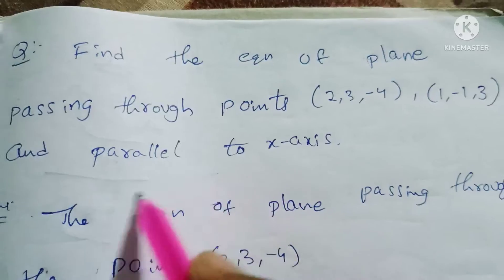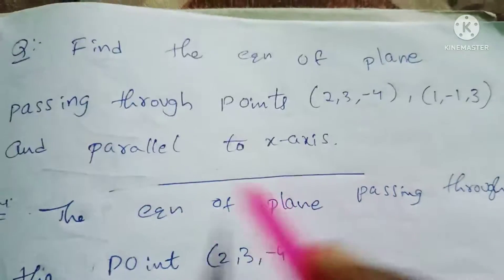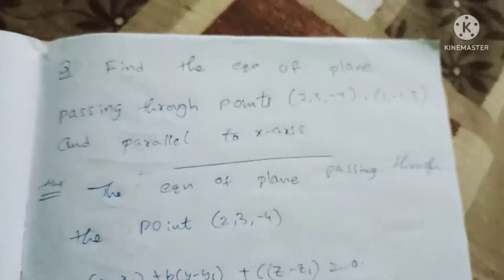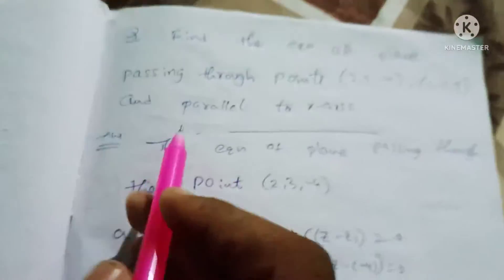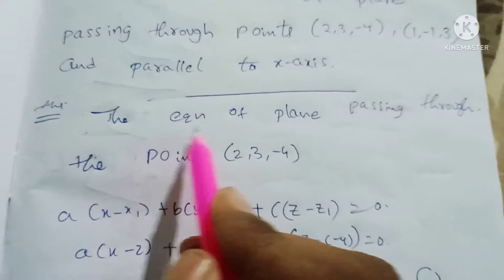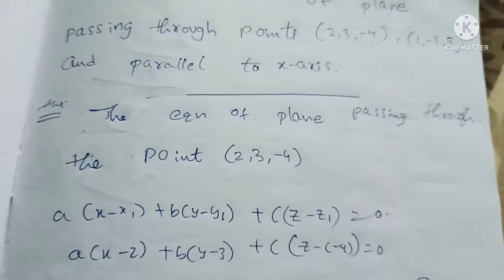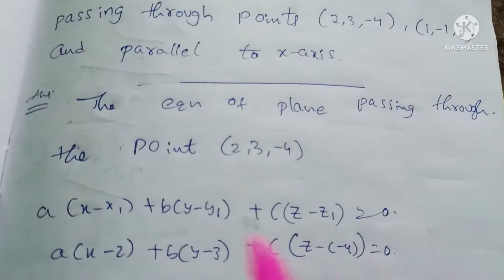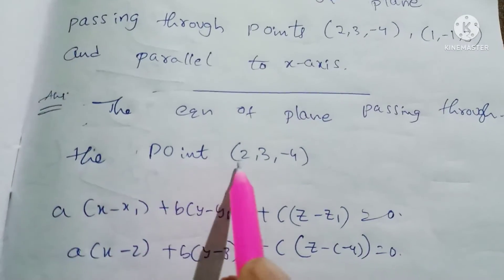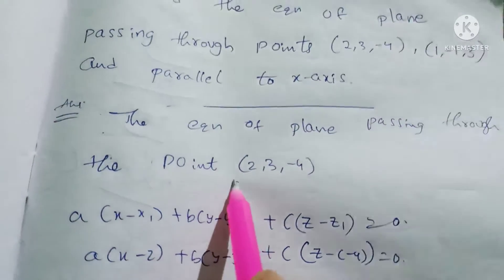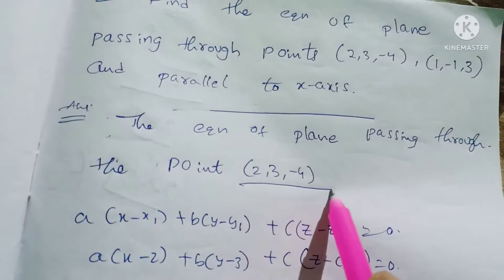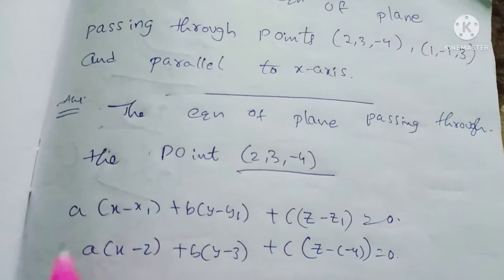This is parallel to the x-axis. That's the solution. The equation of the plane passing through the point (2, 3, -4) — we will go through the point.